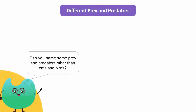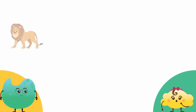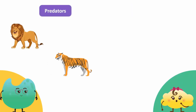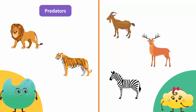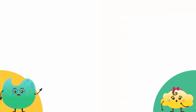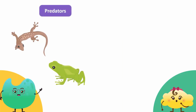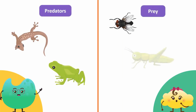Can you name a few preys and predators other than cats and birds? Lions and tigers are predators that eat goats, deer, and zebras, so goats, deer, and zebras are prey. Lizards and frogs are predators as well for insects like flies, grasshoppers, and mosquitoes.